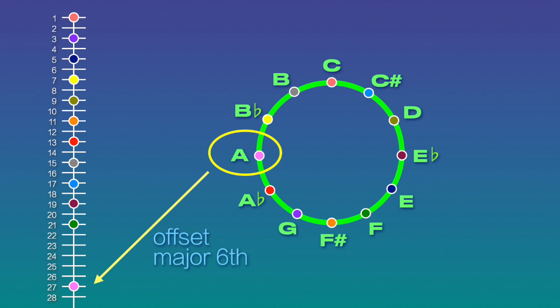This harmonic is also known as the offset major sixth, because it sits apart from the rest of the conventional notes of the 12 note chromatic scale.